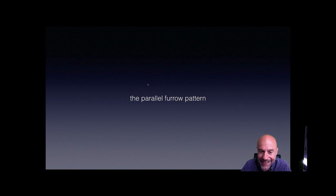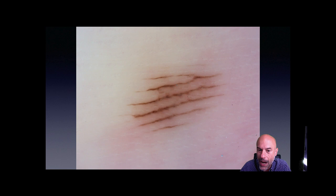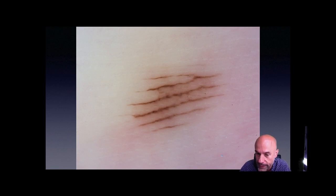Let's see a few more things concerning the parallel furrow pattern. Here is another typical example: parallel brown lines which are much thinner than the non-pigmented bands in between. We can also see the eccrine duct openings located on the ridge, which is not pigmented. So we are sure that the pigmentation is on the furrows — parallel furrow pattern.